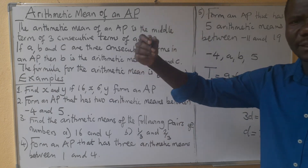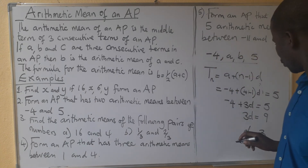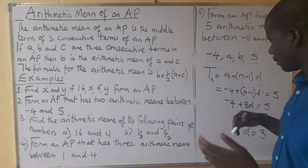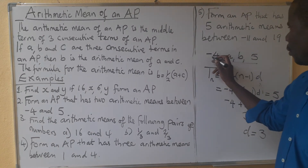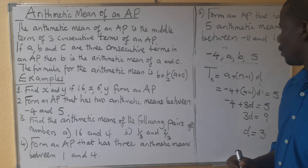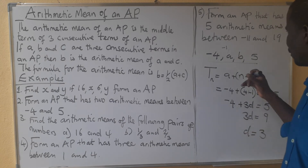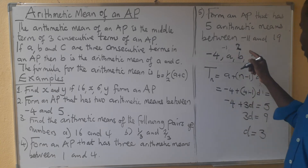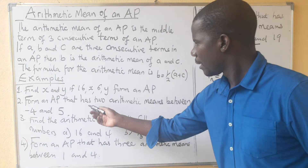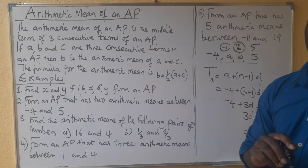Now we add the common difference of 3 starting from negative 4. Adding 3 to negative 4 gives negative 1. Adding 3 to negative 1 gives 2. Adding 3 to 2 gives 5, which brings us back to our last term. So the two arithmetic means inserted between negative 4 and 5 are negative 1 and 2.